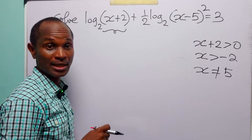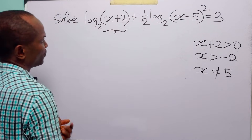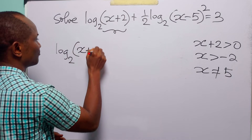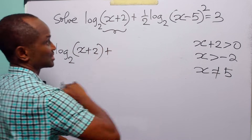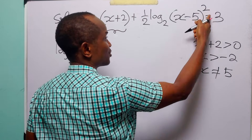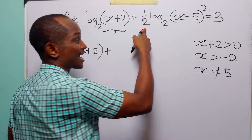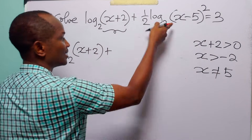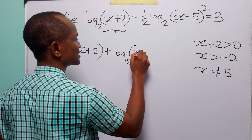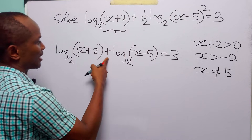What we do is we have log to base 2 of x plus 2, plus we apply the power rule — we bring down the exponent 2 to the front to become a multiplier, and 2 times one-half gives us 1 — so here we have log to base 2 of x minus 5, and this is equal to 3.